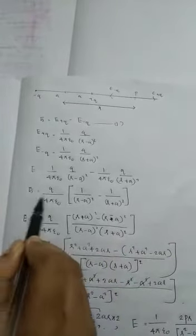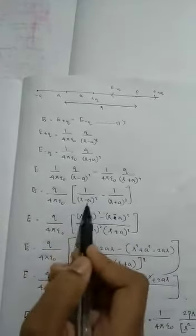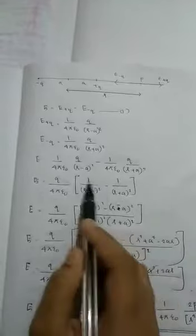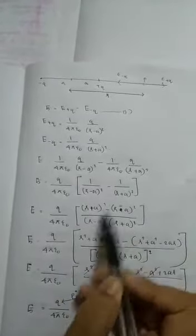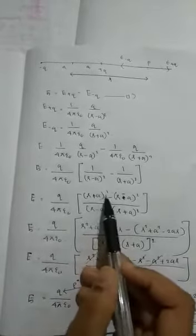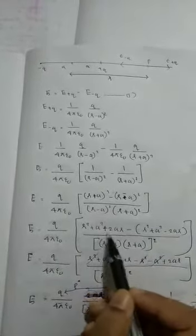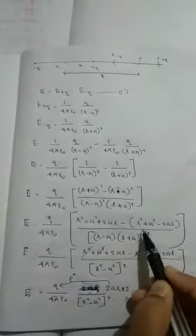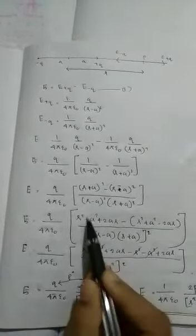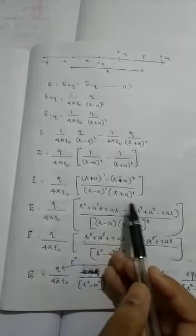So E equals q by 4 pi epsilon-0 times 1 by (r minus a) squared minus 1 by (r plus a) squared. We do cross multiplication, giving (r plus a) squared minus (r minus a) squared all divided by (r minus a) squared times (r plus a) squared. We have a common factor of q by 4 pi epsilon-0 and applying the (a plus b)(a minus b) identity.